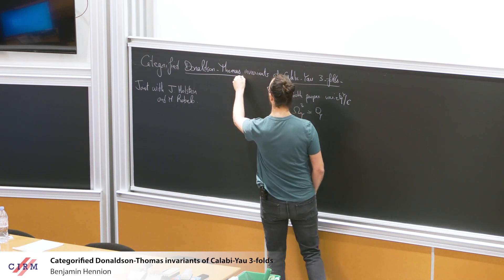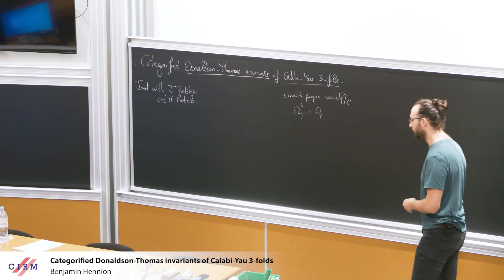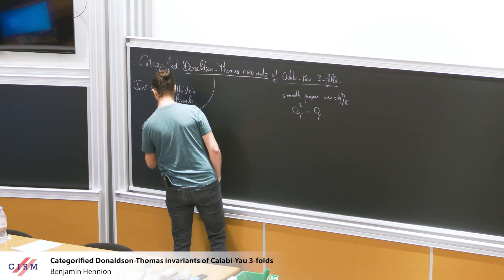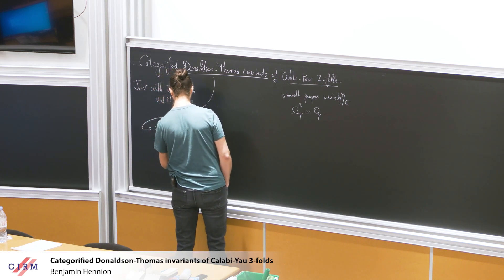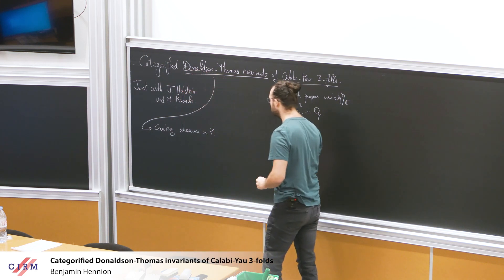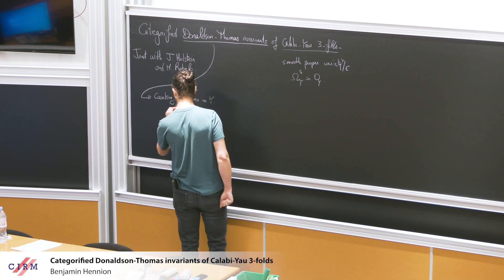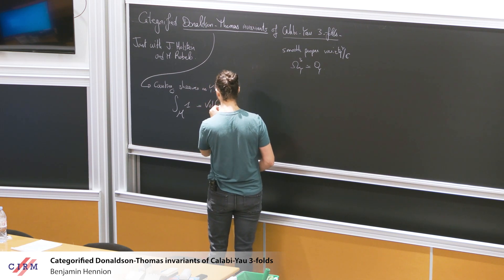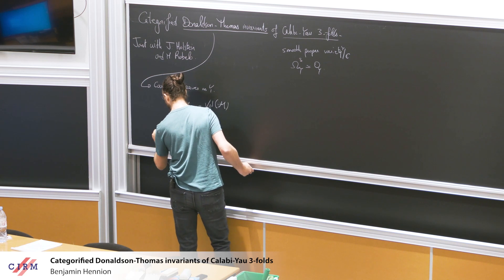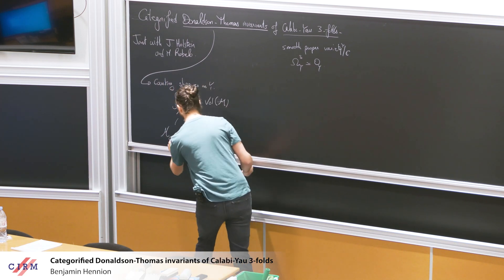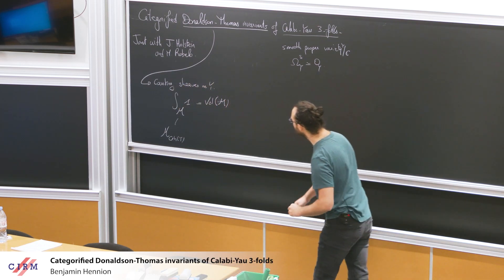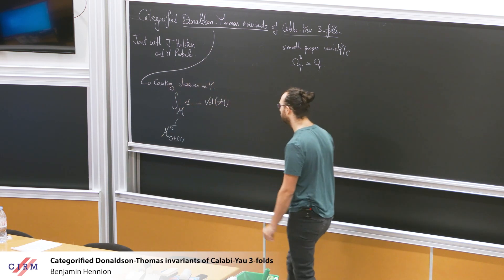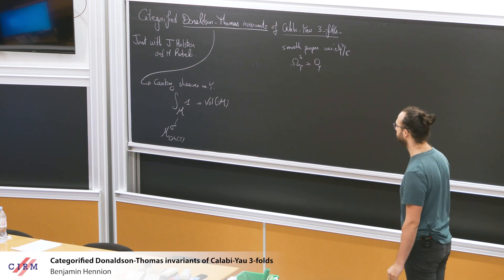The idea is that you want to count sheaves on your Calabi-Yau threefold Y. And in order to count those sheaves, what you compute is some volume of a moduli space M. This M is going to be some moduli space — typically the moduli space of coherent sheaves on Y. And in order to have this well-defined you have to impose some conditions on your sheaves, so typically a stability condition, maybe you fix a determinant. This is not going to be relevant for my talk, but just for background.